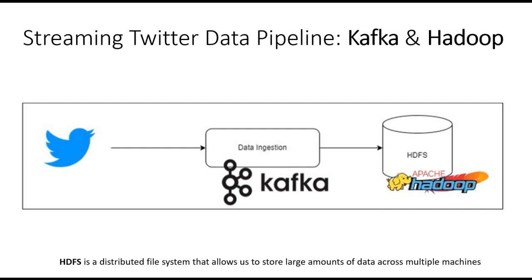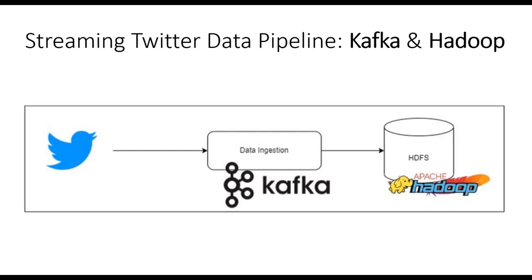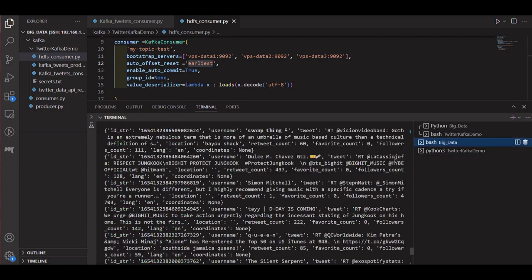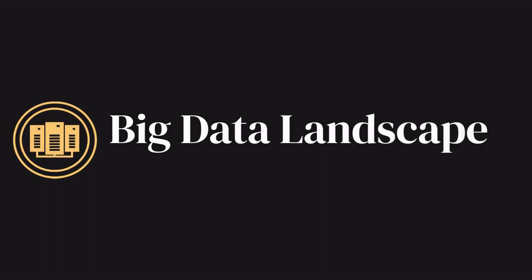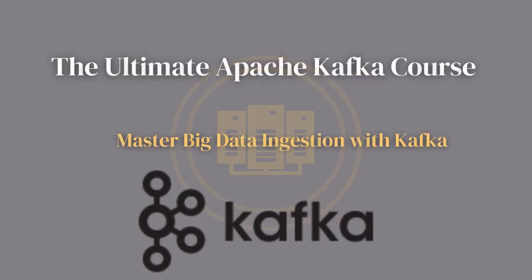HDFS is a distributed file system that allows us to store large volumes of data across multiple machines, providing fault tolerance and scalability. By combining the power of Kafka, the Twitter API, HDFS, and PyDoop, we'll create a robust data ingestion pipeline capable of handling real-time Twitter data at scale. Through this course, you will learn how to implement each component and understand the end-to-end process. Let's dive in and get started — enjoy learning!